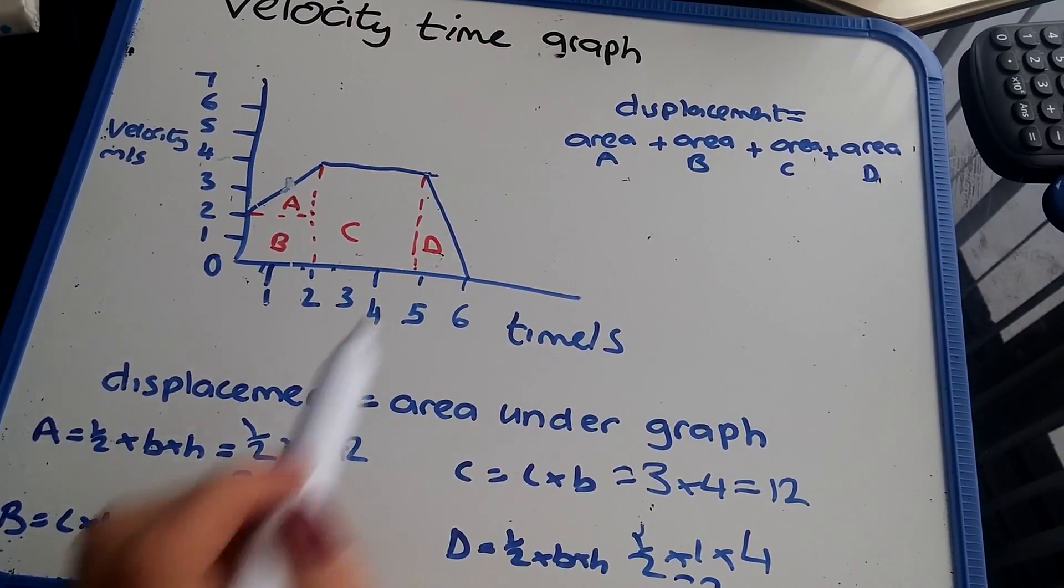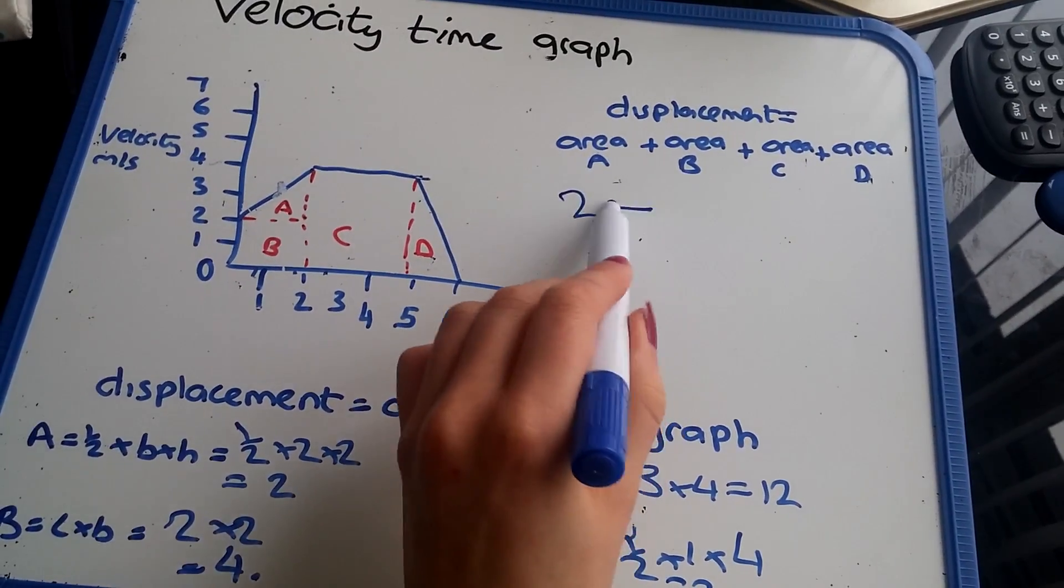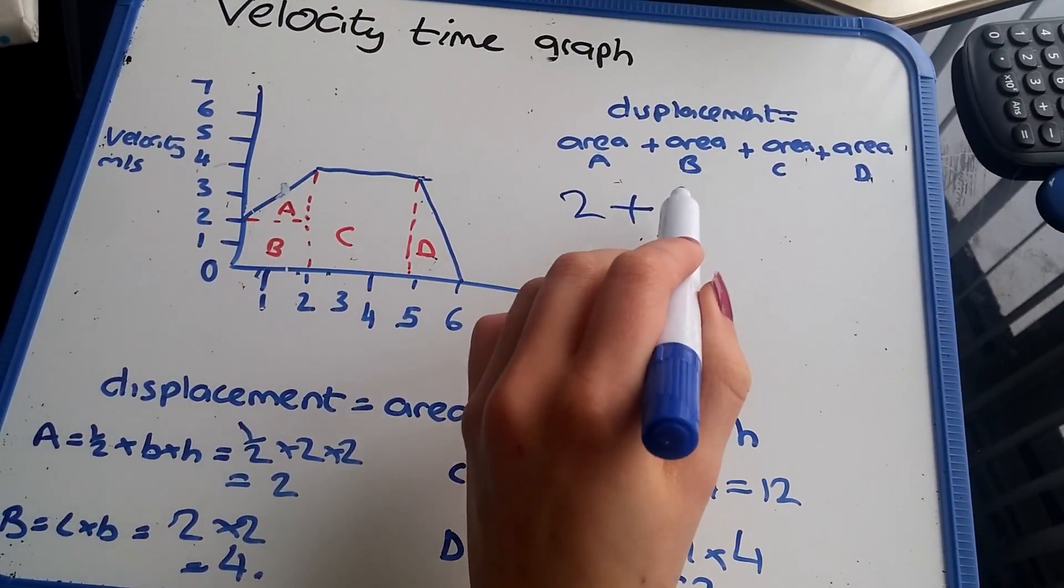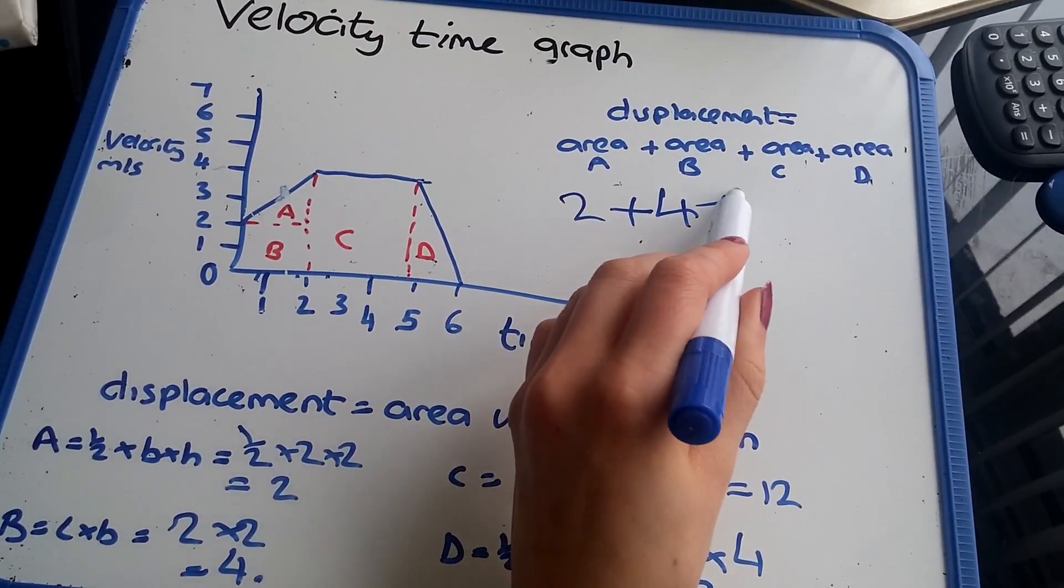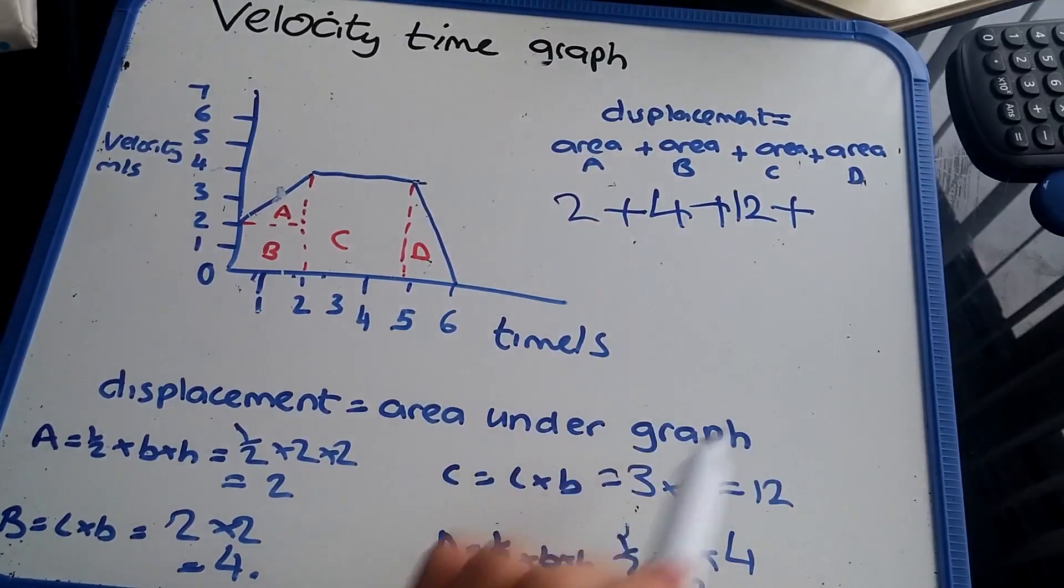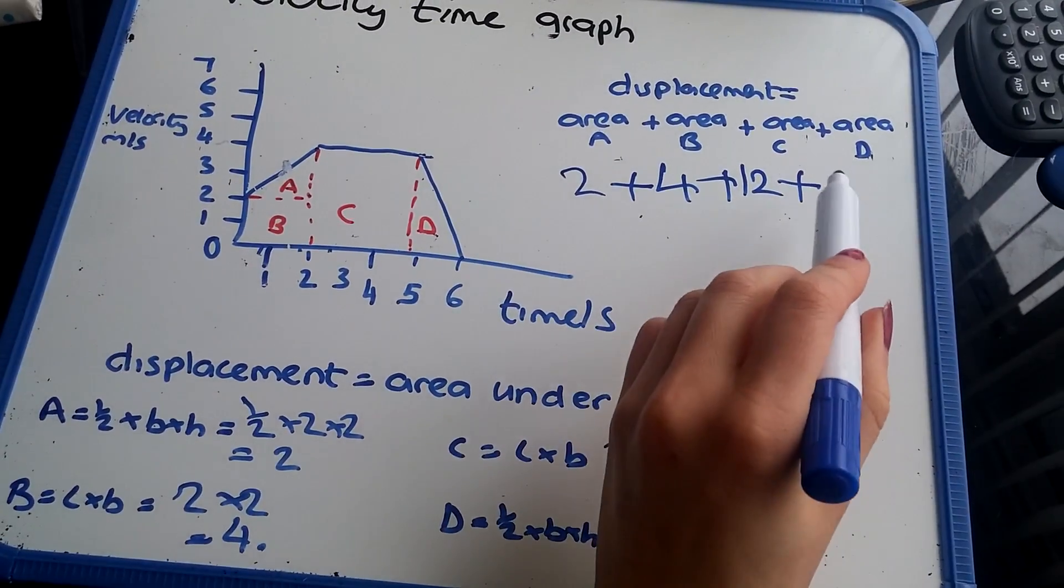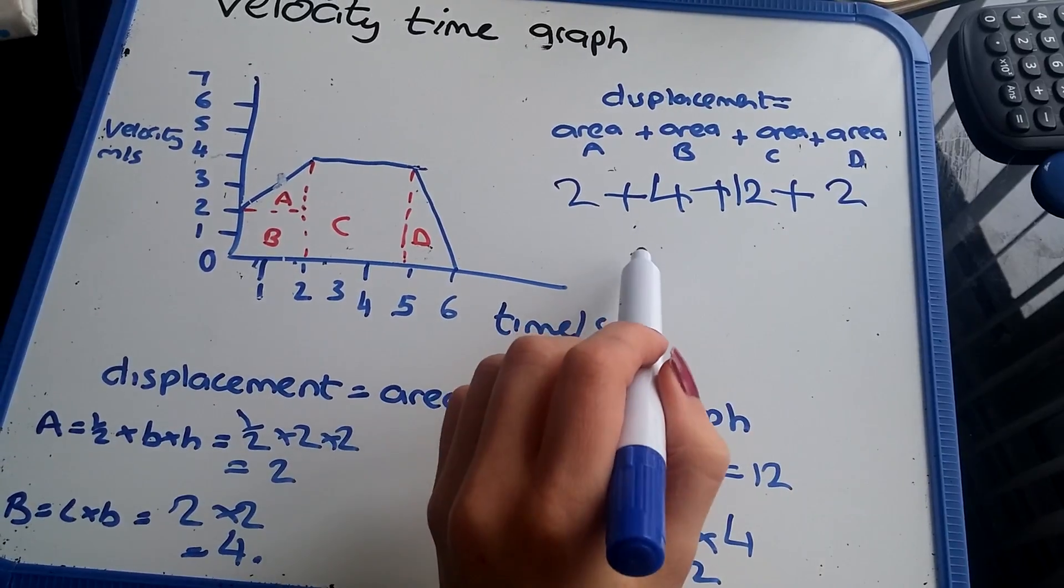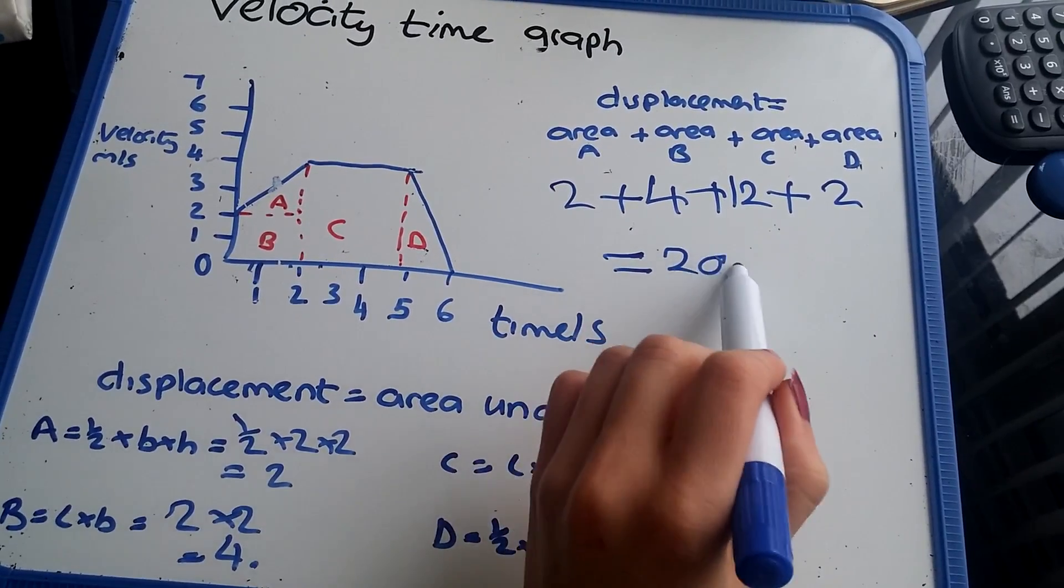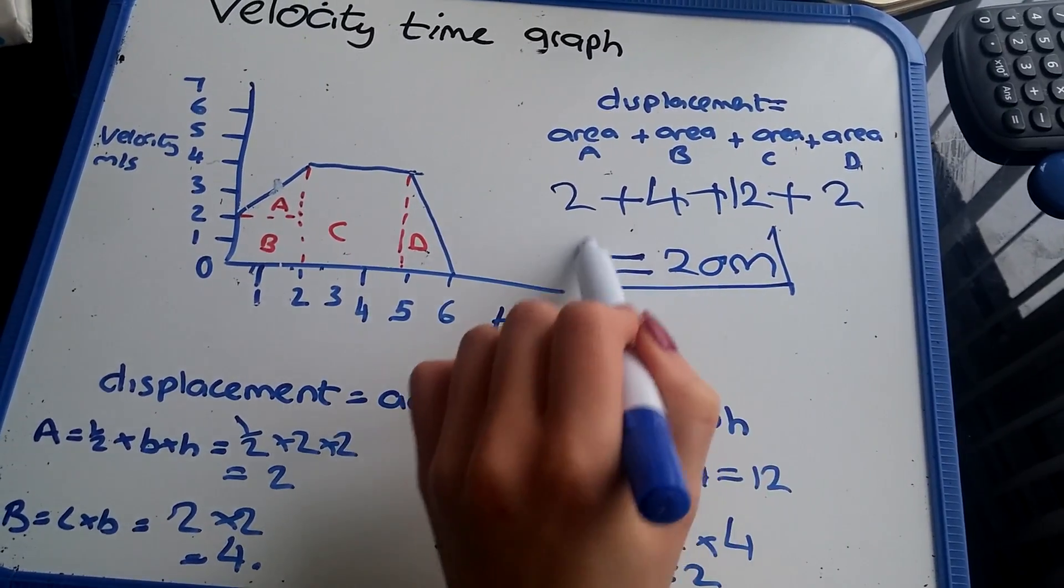So my total displacement is the area of A, which is 2, plus the area of B, which is 4, plus the area of C, which is 12, plus the area of D, which is 2. So that's 20 meters.